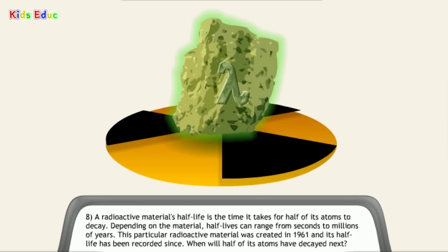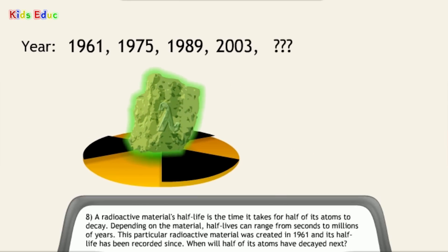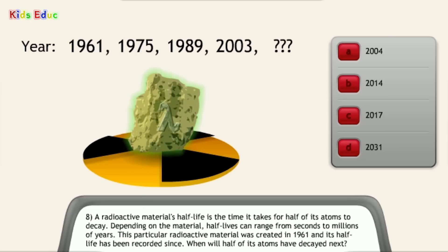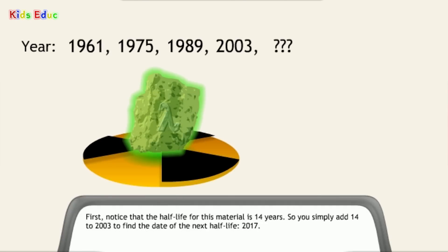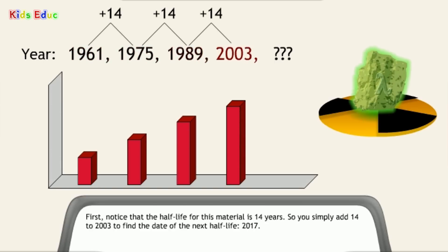Number 8. A radioactive material's half-life is the time it takes for half of its atoms to decay. Depending on the material, half-lives can range from seconds to millions of years. This particular radioactive material was created in 1961, and its half-life has been recorded since. When will half of its atoms have decayed next? That's correct. First, notice that the half-life for this material is 14 years. So, you simply add 14 to 2003 to find the date of the next half-life, 2017.